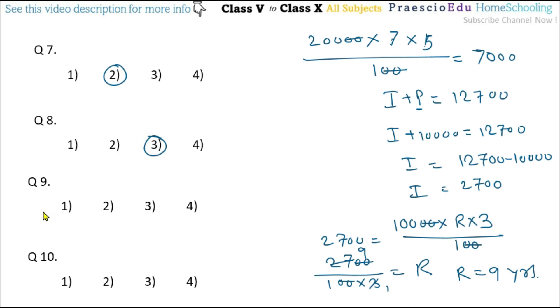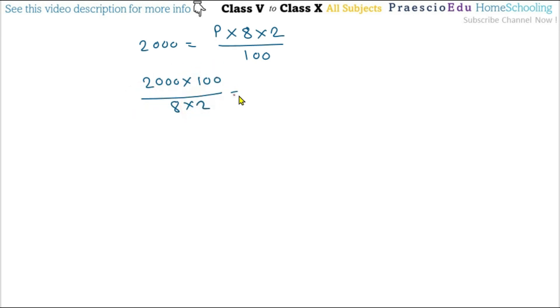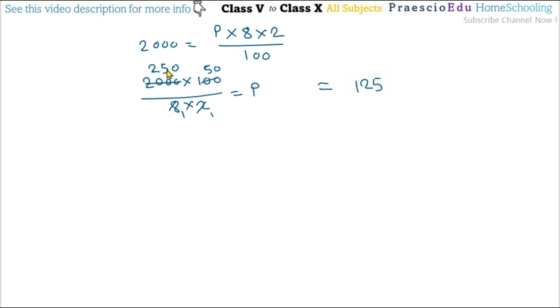Question number 9: what amount should Shrikant deposit to receive ₹2000 as interest for 2 years at 8% per annum? So 2000 = P × 8 × 2 / 100. Rearranging: P = 2000 × 100 / (8 × 2) = 200000 / 16 = 12500. So the principal amount is ₹12,500 — option number 1.